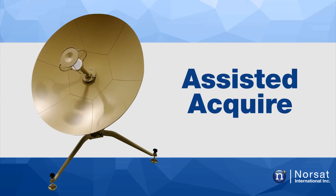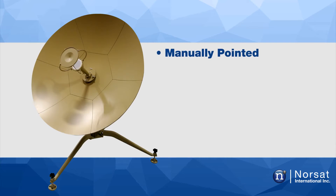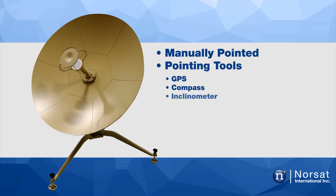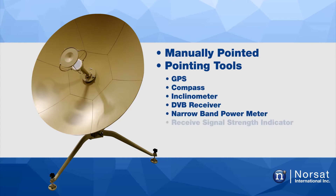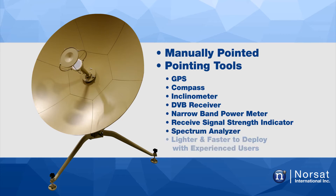Assist-acquired terminals are manually pointed by the operator. Pointing tools to assist the user to acquire the satellite and peak the signal may consist of a GPS, compass, inclinometer, DVB receiver, narrowband power meter or receive signal strength indicator, and a spectrum analyzer. The benefit of an assist-acquired system is that it is lighter and faster to deploy with an experienced user than an auto-acquired terminal.